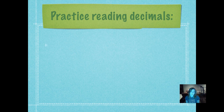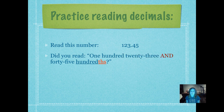Practice reading decimals. Read this number — go ahead and pause while you're reading it so that you don't hear me say the answer. Did you read '123 and 45 hundredths'? That 5 is in the hundredths place. Decimal, tenths, hundredths — the 5 was in the hundredths place, so we would read that part '45 hundredths.' Don't forget, only say 'and' when you see the decimal. And listen when I'm saying it because you might catch me saying something wrong and then I would owe you guys a push up.